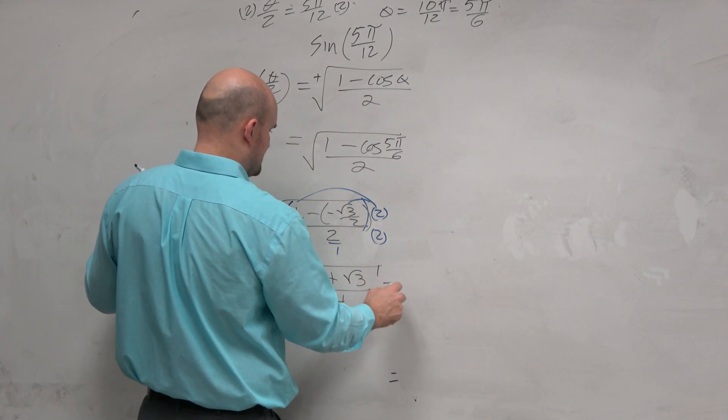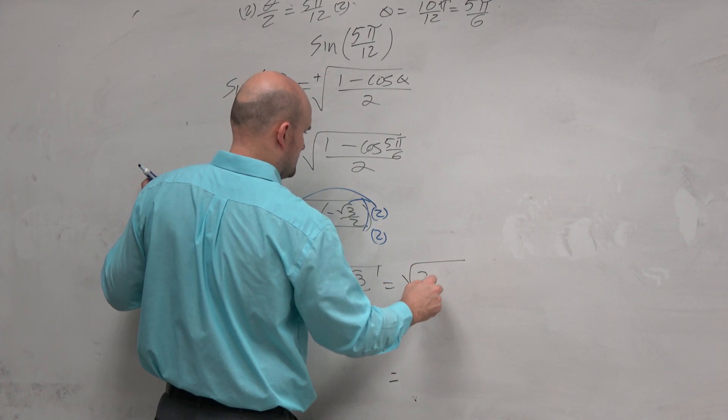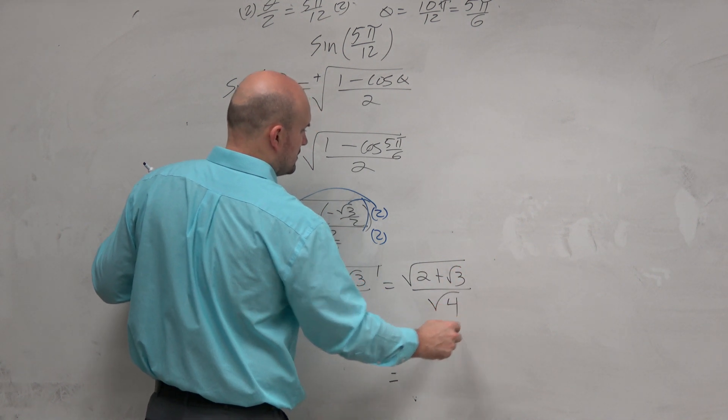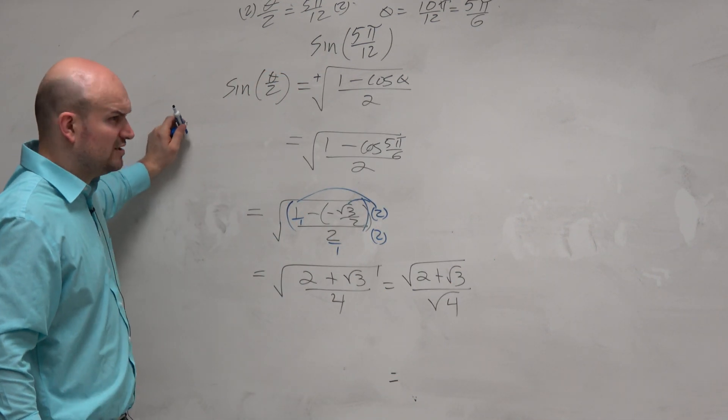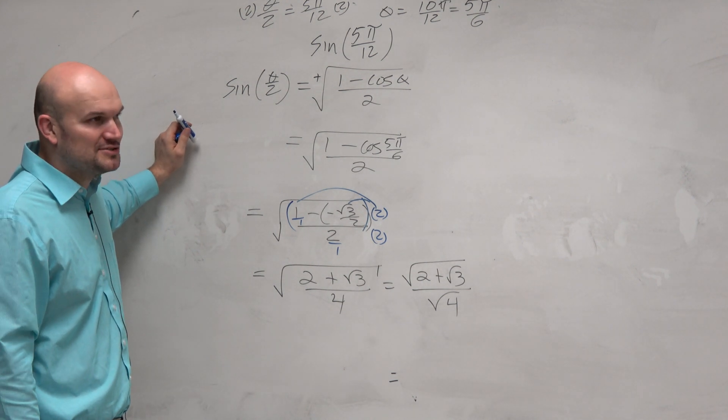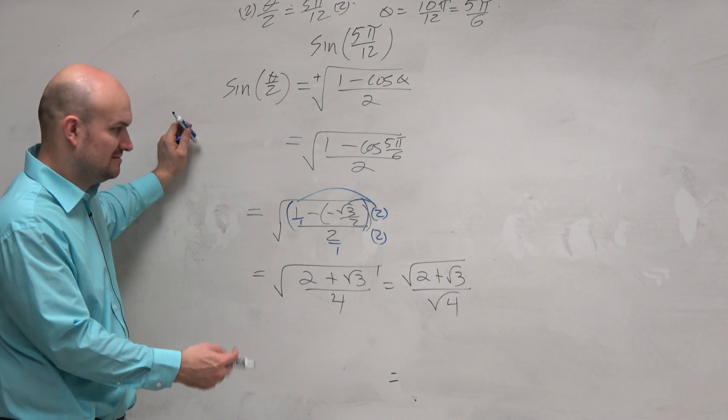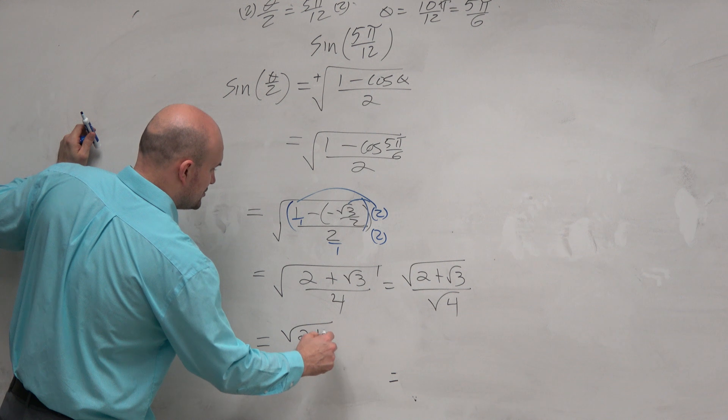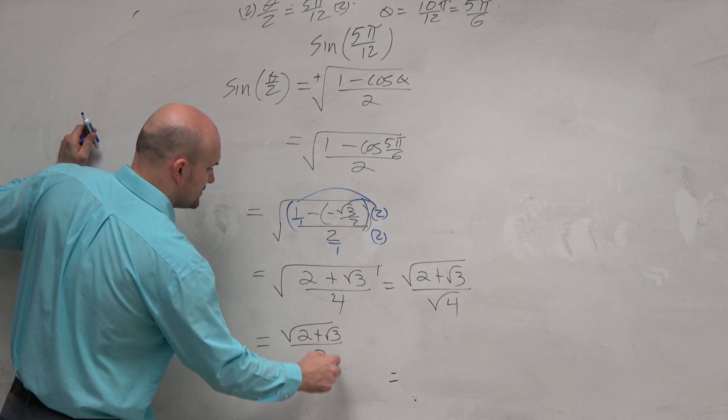Now, is this legal? Can we break a radical across division? Yeah, as long as it's not addition and subtraction. So that's fine. What's nice about that is we can simplify this: 2 plus the square root of 3, all over 2.